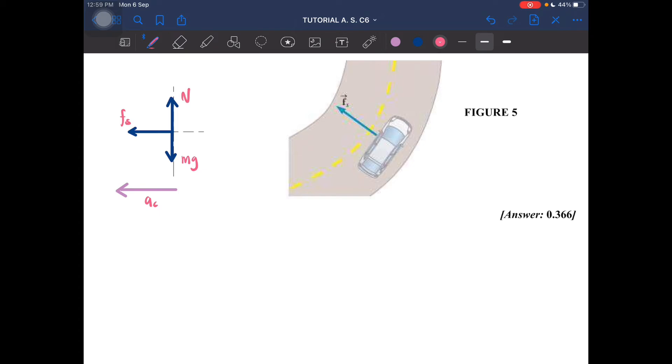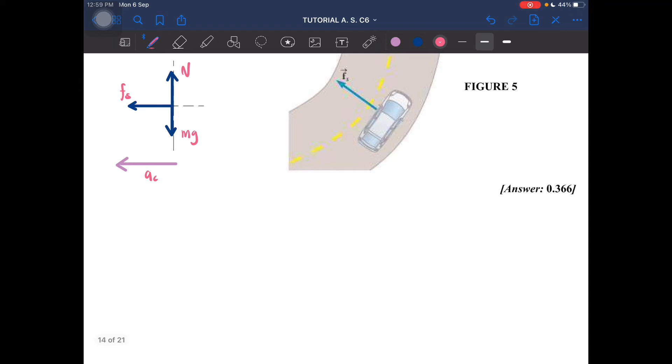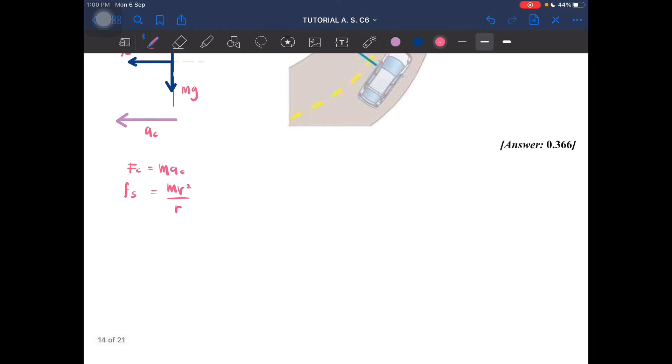Okay, so now you're gonna look at Fc equal to mac, where Fc is equal to fs, which equals mv squared over r. Let's do fs is equal to μs times n. μs is the one we are looking for.